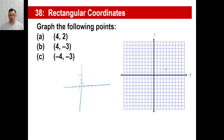For B, x is positive 4 so go one, two, three, four to the right, then negative three for y means you go down one, two, three — there you go. Pause and try C. For C, x is negative four so go one, two, three, four to the left, and y is negative three which means go down on the y number line: one, two, three. That is your third point.